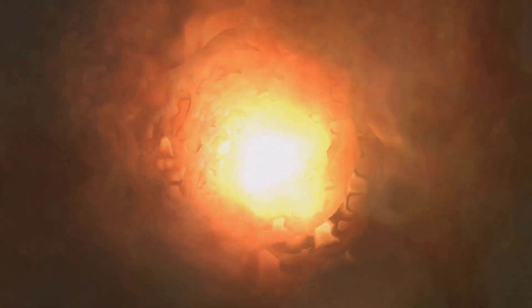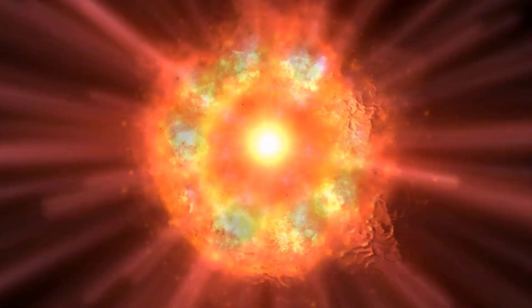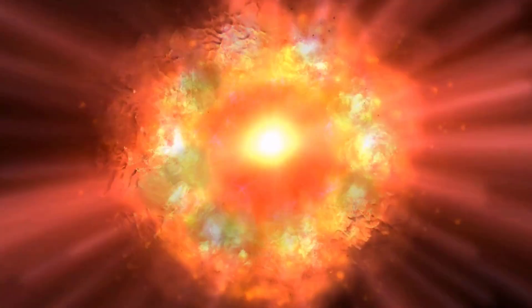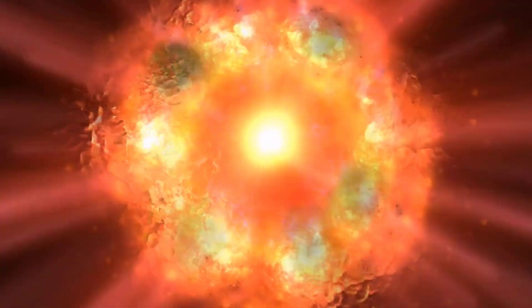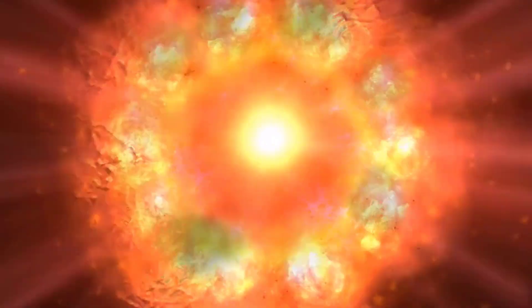This strange behavior has led many to believe that Betelgeuse is nearing the end of its life cycle and is on the brink of a supernova. A supernova is a powerful explosion that occurs when a star runs out of fuel and can no longer generate energy through nuclear fusion. As the star's core collapses, a massive amount of energy is released, causing the outer layers of the star to be expelled into space.